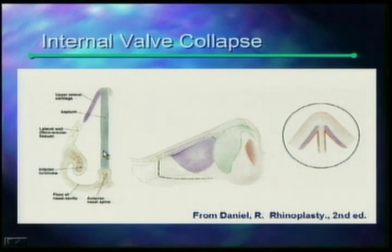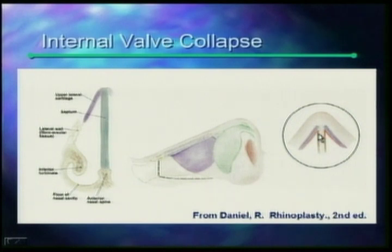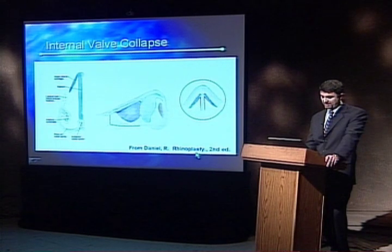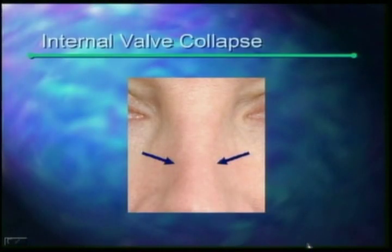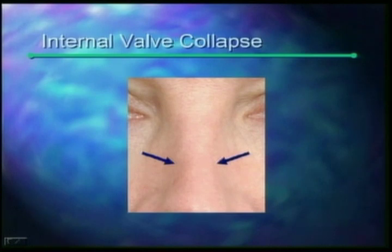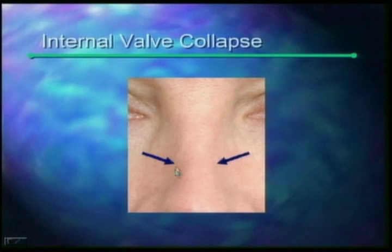In the past, rhinoplasty surgeons often didn't take this into account. When removal of the dorsal hump or cartilage was performed, the area often collapsed — this is termed internal nasal valve collapse, resulting in a pinched-looking nasal dorsum and decreased nasal airflow. Often these patients were happy with the appearance of their nose because it was narrower, but they could not breathe. Here is an example of a patient with internal nasal valve collapse who underwent rhinoplasty many years ago by another surgeon. She was fairly happy with the appearance of the nose; however, she simply could not breathe. She does have some pinching of the mid-nasal vault, and on internal nasal exam she was found to have collapse of her internal nasal valve.